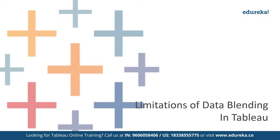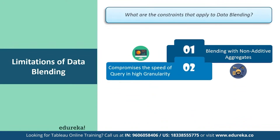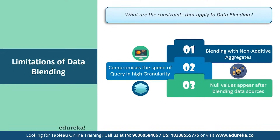Now let's discuss the limitations of data blending. First, blending with non-additive aggregates: there are some limitations around non-additive aggregates such as COUNT DISTINCT, MEDIAN, and RAW SQL aggregate. When you blend on a field with a high level of granularity — for example, date instead of year — queries can be slowed down, so query speed gets compromised. Second, null values can sometimes appear in place of the data you want in the view when using data blending. This can happen because the secondary data source does not contain values corresponding to the primary, the data types of the fields being blended are at different levels of detail, or the values in the primary and secondary data sources use different casing.